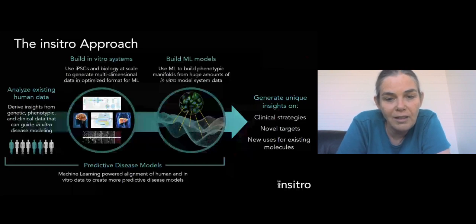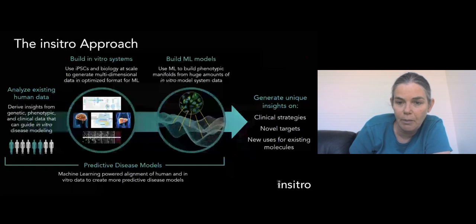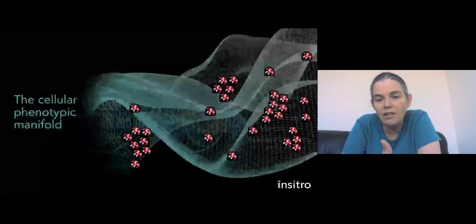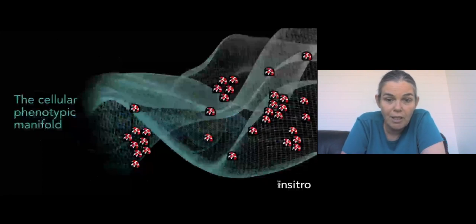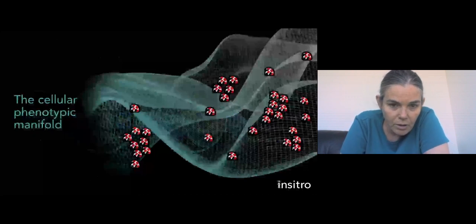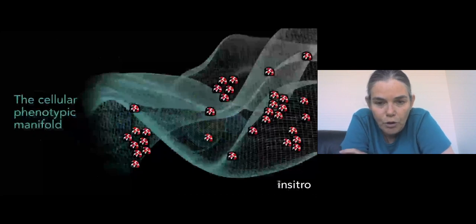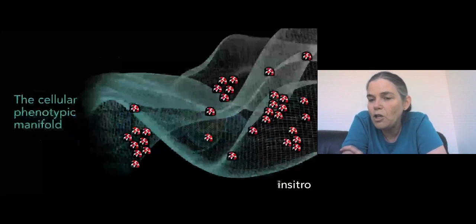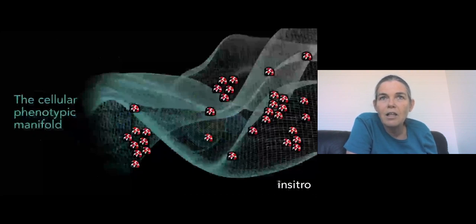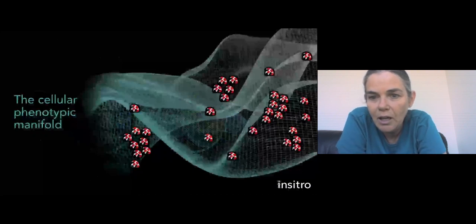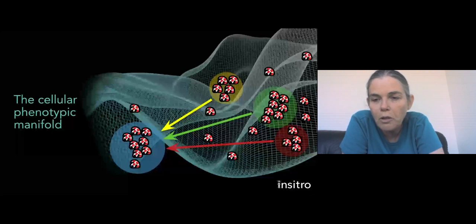So the fundamental core of this approach is what we call the cellular phenotypic manifold. So this is taking the data that we have on the different cells with a different genetic background and using machine learning models, specifically deep learning, to embed those data points in a low-dimensional manifold that sits in a very high-dimensional space. Now, one of the things that we believe will emerge from that is a segmentation of those cells into subsets that look quite different from each other at the cellular level.